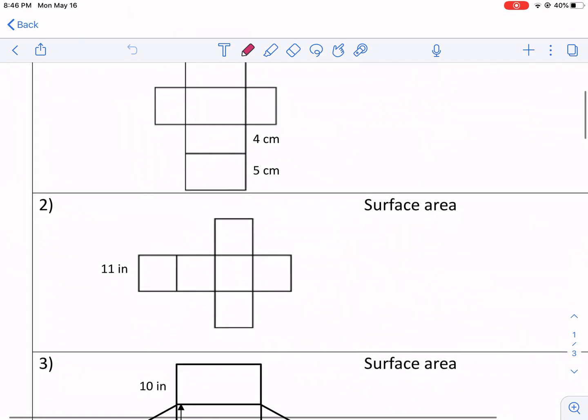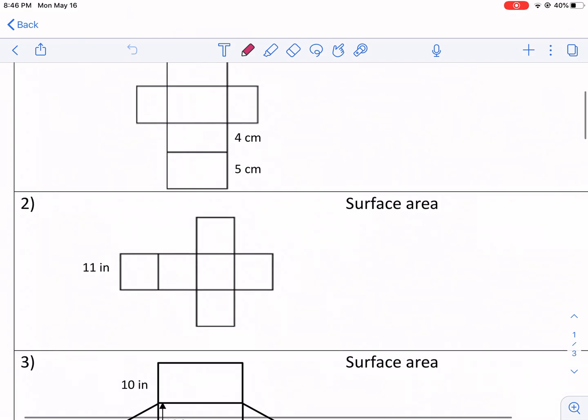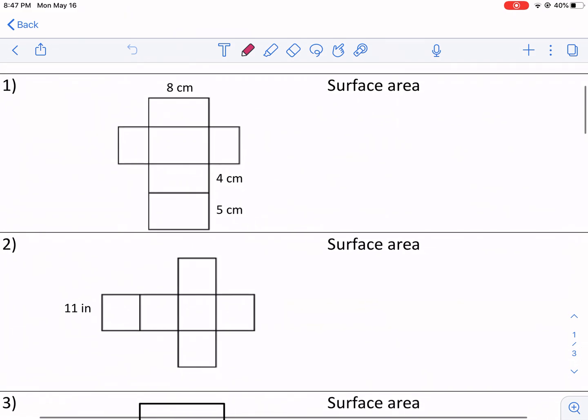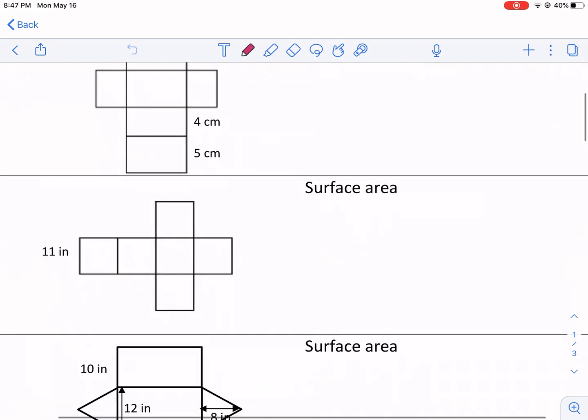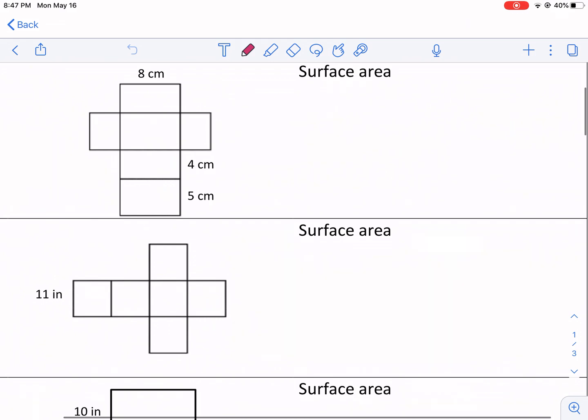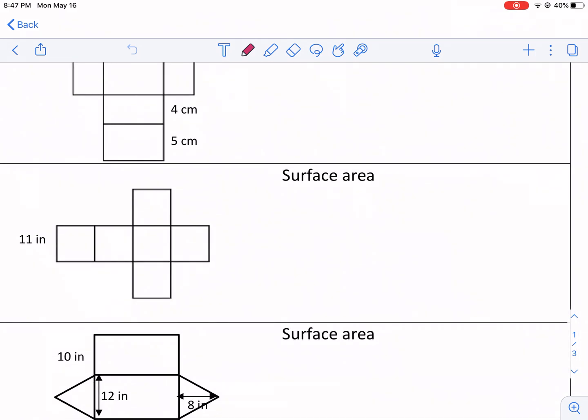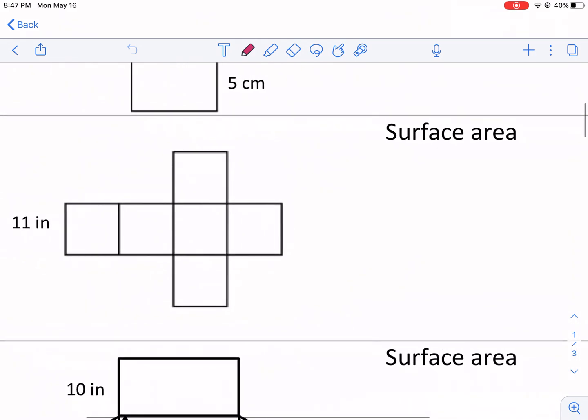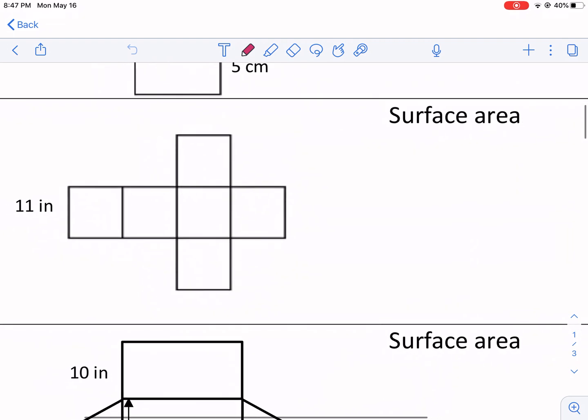Now the basics for surface area - we're talking about the outer surface of a 3D image. So all these could get folded up into a 3D image and this is what we call nets. These are all nets, the flattened out version. If you think about an Amazon box, this is the flattened out version, it can fold up into something else.